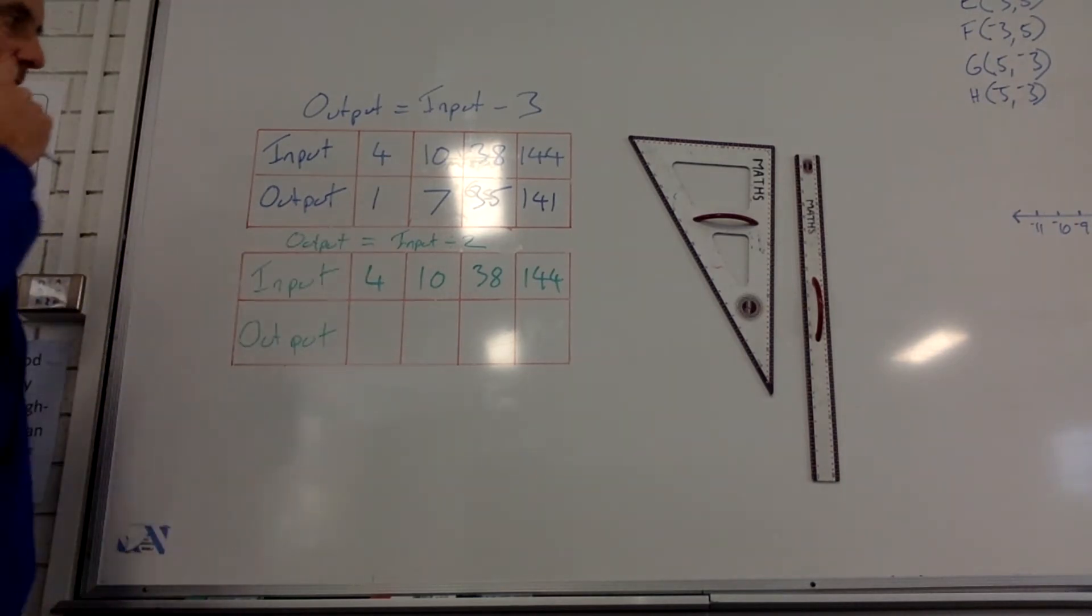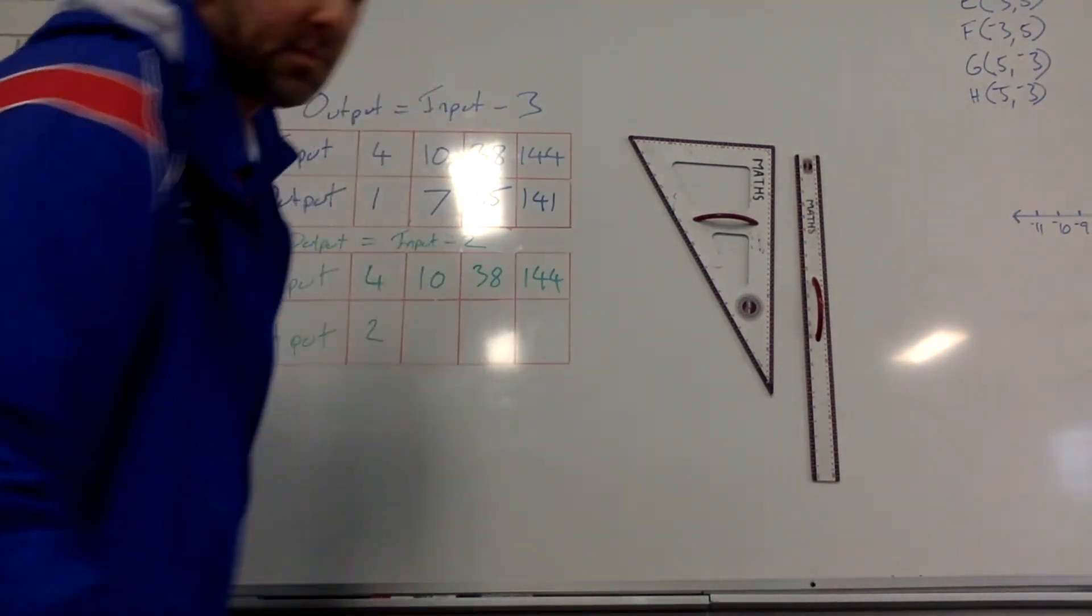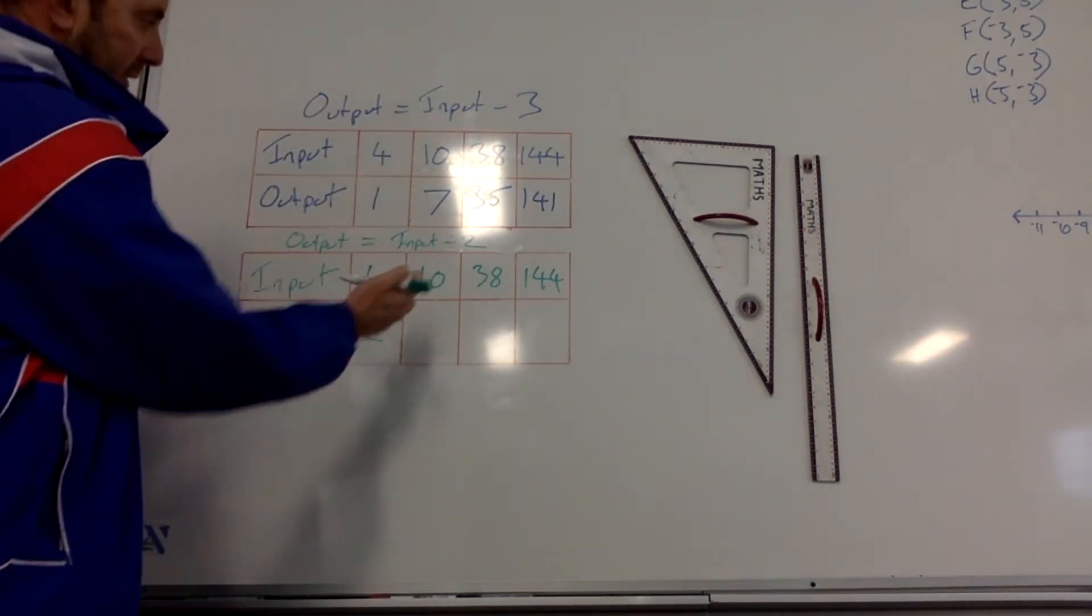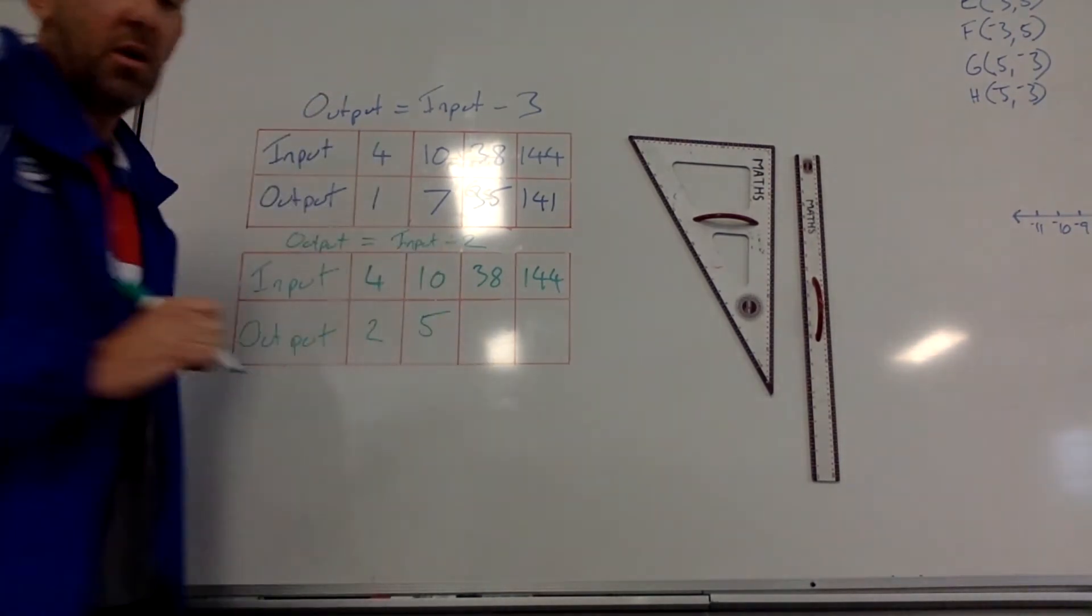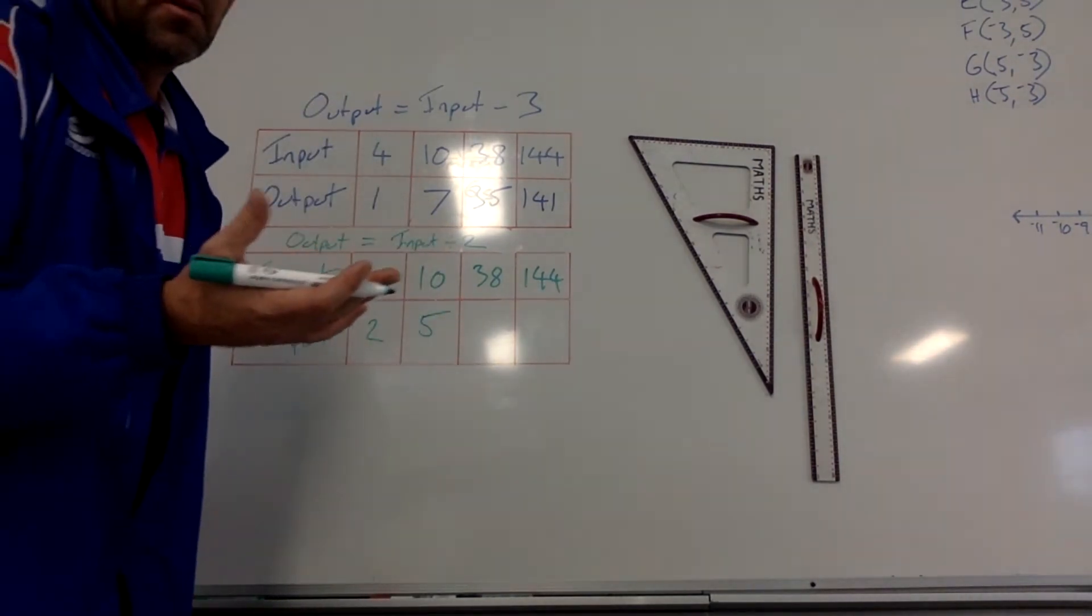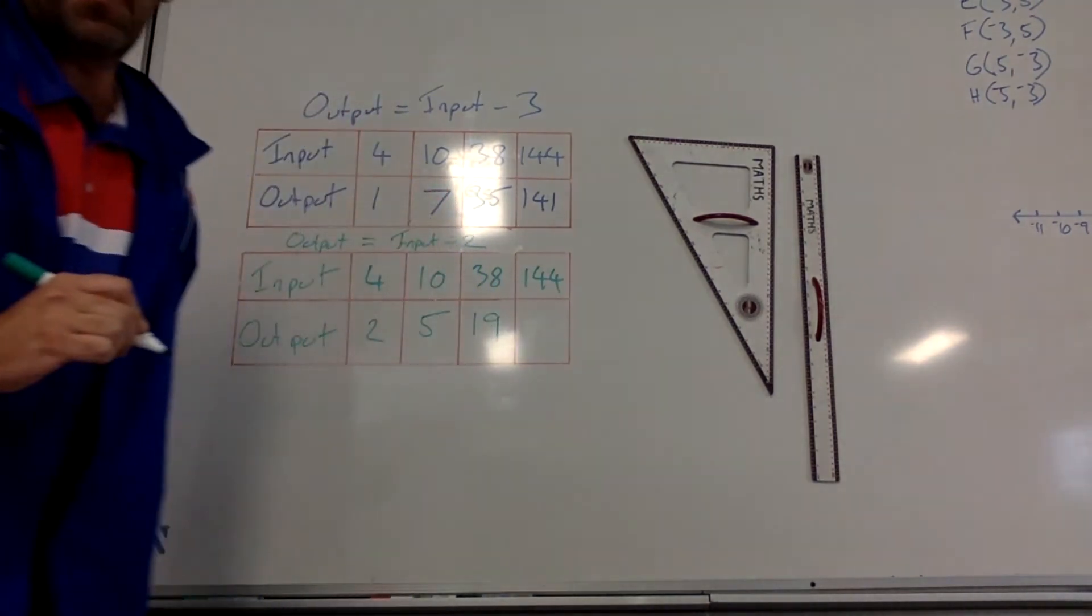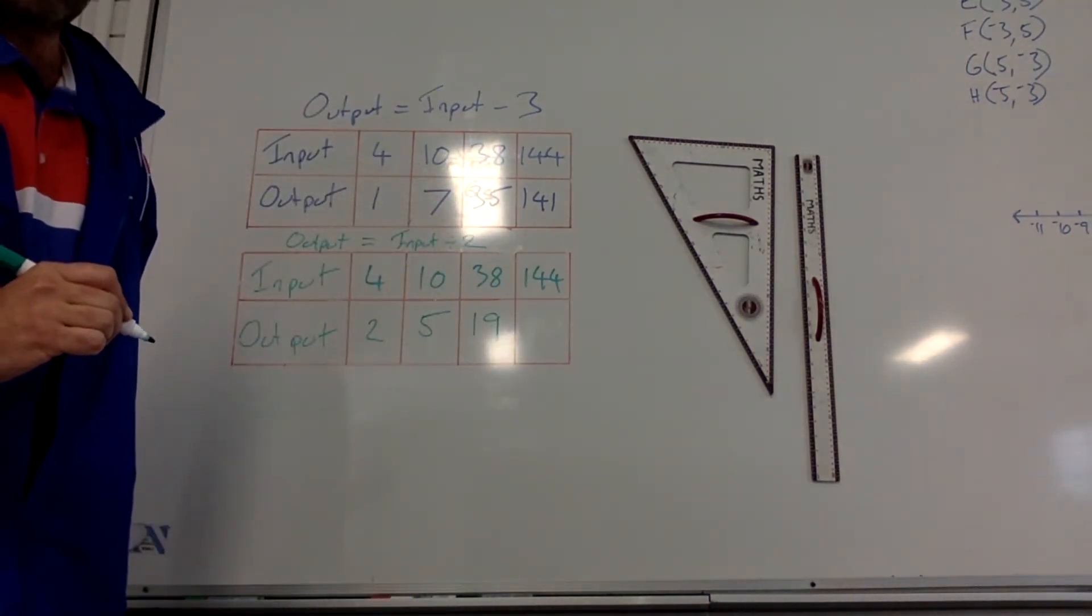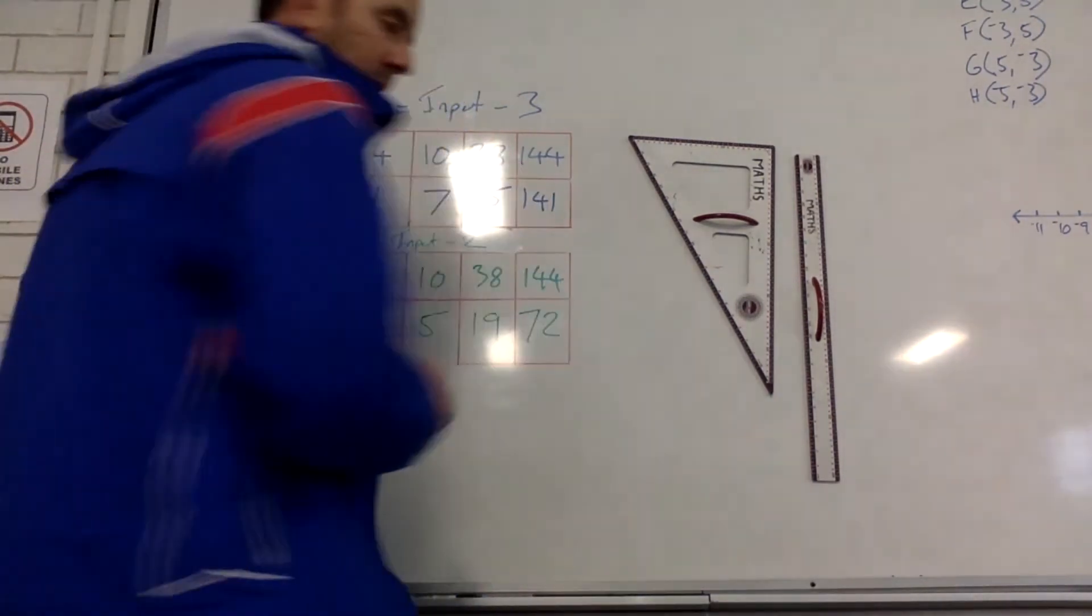So, for the first one, 4 divided by 2 is going to be 2. Second one, we've got 10 divided by 2, which will be 5. 38 divided by 2, which is going to be 19. And 144 divided by 2 is going to be 72.